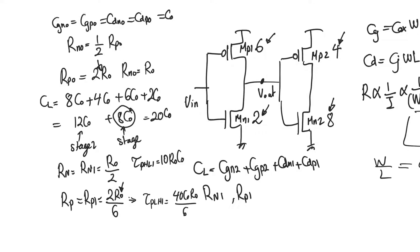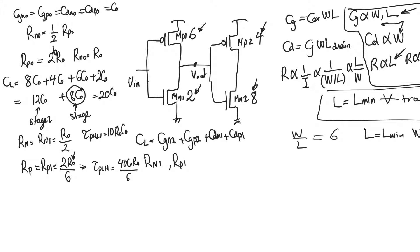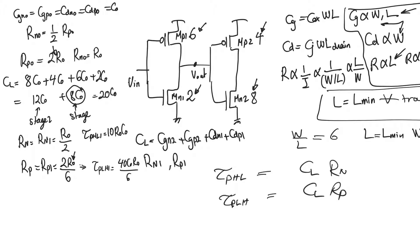If we want equal high-to-low and low-to-high delay, note that C_L is the same in both cases — what differs is R_N and R_P. Since R_N0 is half of R_P0, to equalize the delays we must size the PMOS at double the size of the NMOS. This is the same result we obtained when analyzing the logic threshold of the CMOS inverter.